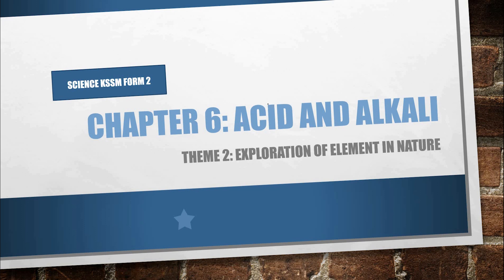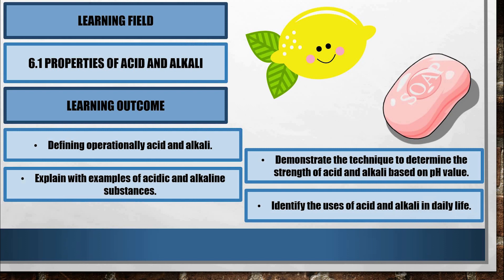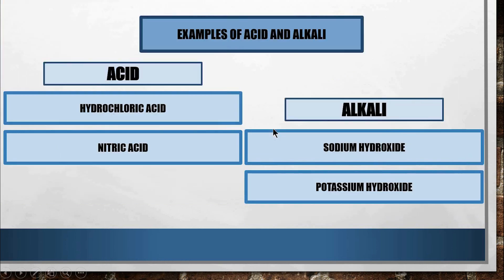The other topic included in this theme is Chapter 5: Water and Solution. In this chapter, you will first learn about the properties of acids and alkalis, how to differentiate them, and then you will learn about the neutralization process between acid and alkali. You will also define operationally what acid and alkali are, and demonstrate techniques to determine their strength based on pH value and other properties.